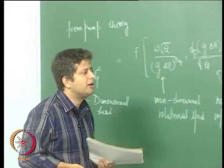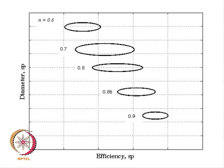Now if you have this, then you can plot it as shown here in this figure. On the x-axis you have the non-dimensional rotational speed given as N_sp and on the y-axis you have the non-dimensional impeller diameter given as D_sp. The numbers given here are efficiencies: 0.6, 0.7, going all the way up to 0.9. For high efficiencies you need to be in this region, which means your impeller diameter needs to be very small and your rotational speed needs to be very large.